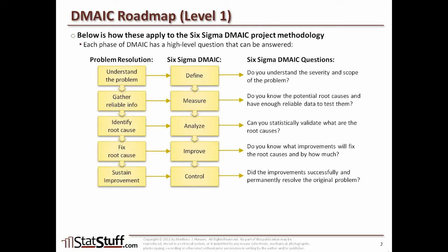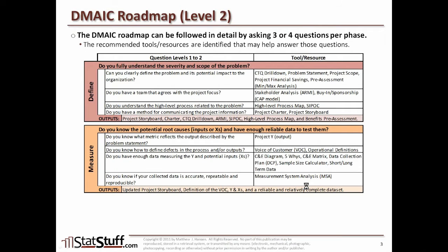We also took that a step further — what we call level one. At the top level, we have each of the different questions we're asking for each of the phases within the DMAIC methodology. We dug into taking those questions to another layer, a second layer, where for each phase we have the top-level question. If you cannot answer yes to that question, you ask yourself the second layer of questions, which serve as a guide for the different tools or resources that can help you ultimately answer the top-level question.